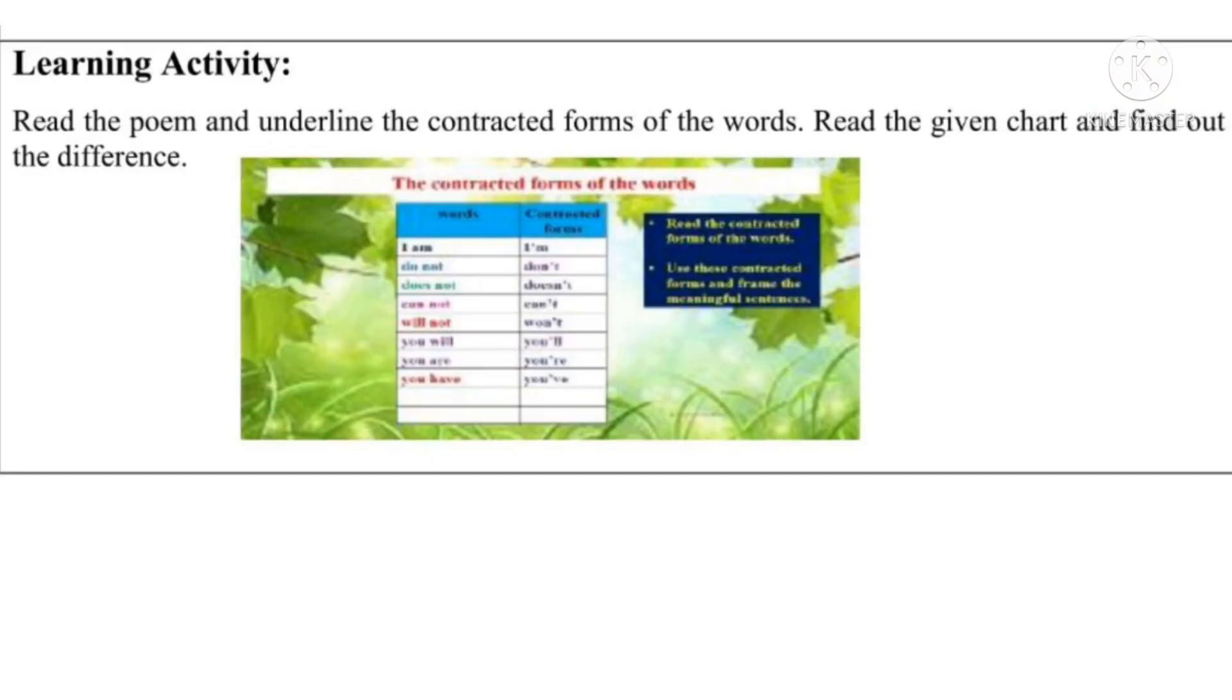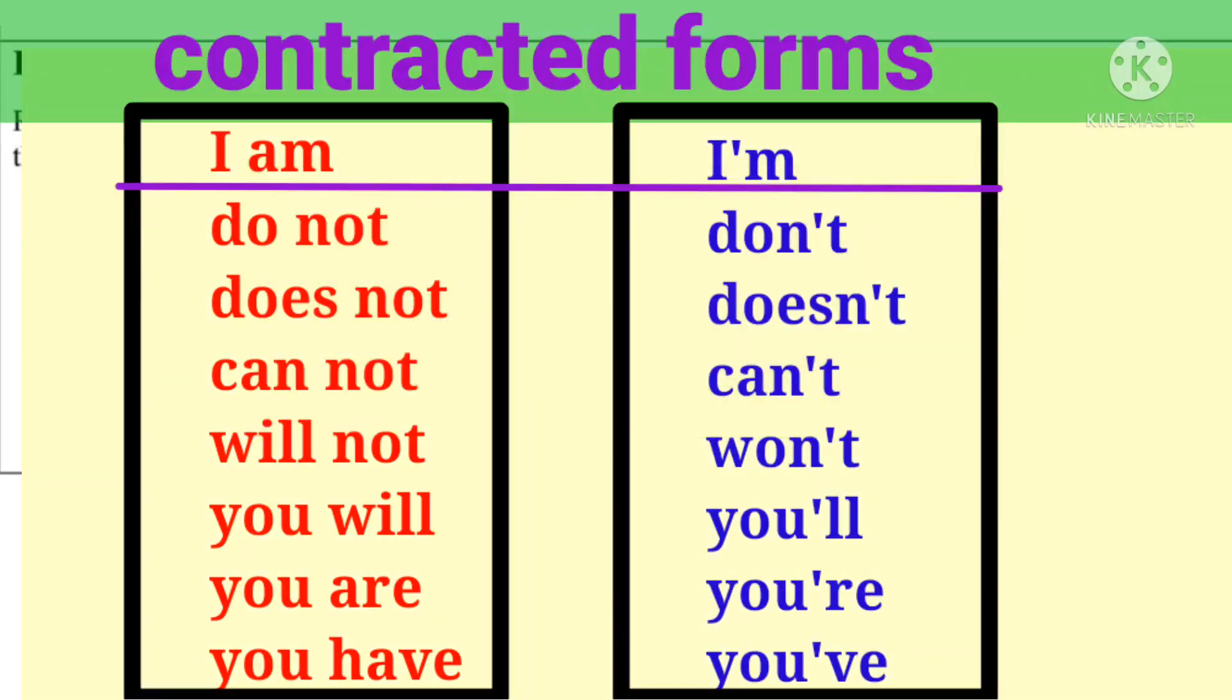Now there is a learning activity. What is that? Read the poem and underline the contracted forms of the words. Read the given chart and find out the difference. After reading the poem, we have already recited the poem, we have also read it. Now you have given the chart.